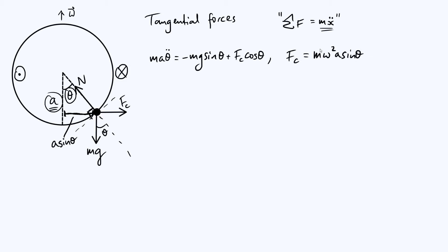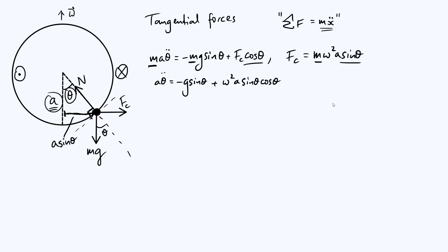Notice that all of these force terms have a common factor of M, so we can cancel them. Our equation of motion becomes: a theta-double-dot equals minus g sine theta plus omega squared a sine theta cosine theta. Let's tidy this up — put everything on the same side and divide by a to get: g over a times sine theta minus omega squared sine theta cosine theta equals zero.